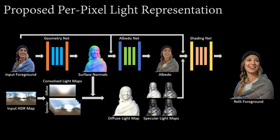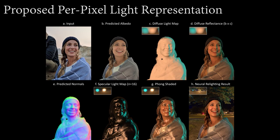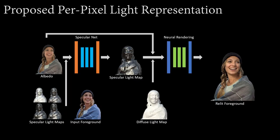For the relighting module, we introduce a novel pixel-aligned lighting representation, based on the insight that UNET type architectures favor spatially aligned inputs. We pre-convolve the target lighting with Lambertian and Phong specular reflectance lobes, and then index into these pre-filtered environment maps using inferred surface normals to produce both diffuse and specular light maps. We provide these light maps along with inferred albedo as input to a neural rendering network to produce each relit foreground.